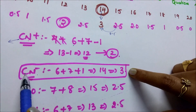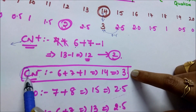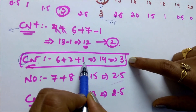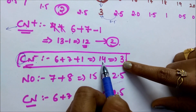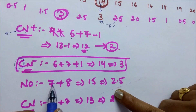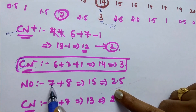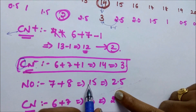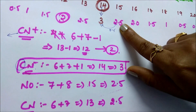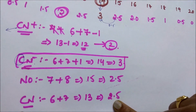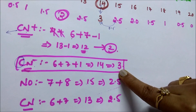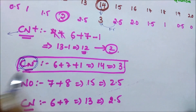Next, CN-: carbon atomic number 6, nitrogen 7, and minus means you add one electron. The sum gives 14. 14 means the bond order is 3. For NO: nitrogen is 7, oxygen is 8, sum is 15, so bond order is 2.5. For CN, you also get 2.5. Among these four, the highest bond order is 3, which is for CN-.